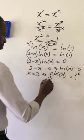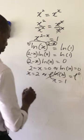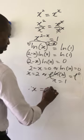And this, the e and natural log will cancel. So we have x here equal to 1. Therefore, x is equal to 1 comma 2.